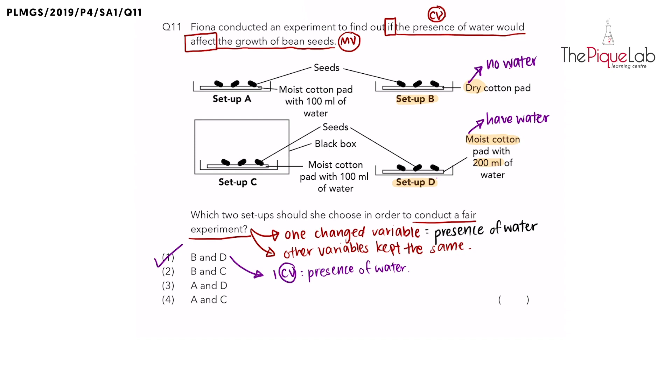So let's look at B and C. Now we're focusing on B versus C. And what's the difference between B and C? B is placed on dry cotton pad, once again, no water. But C is placed on a moist cotton pad. So C does have water. And that's not the only difference. What else does C not have? C is placed in a black box.